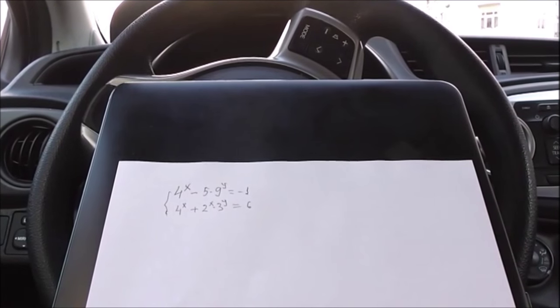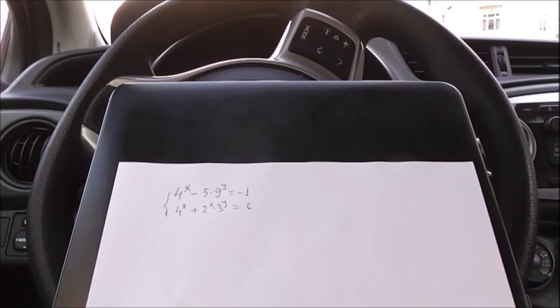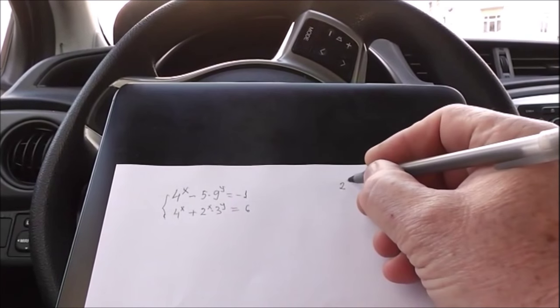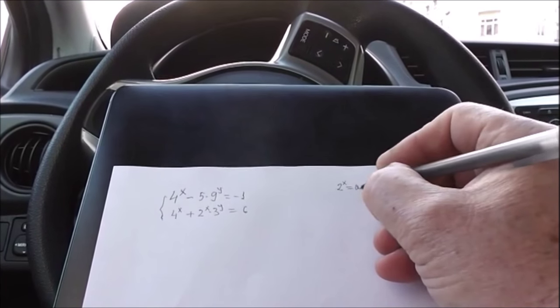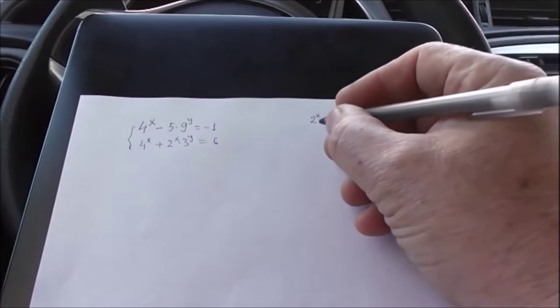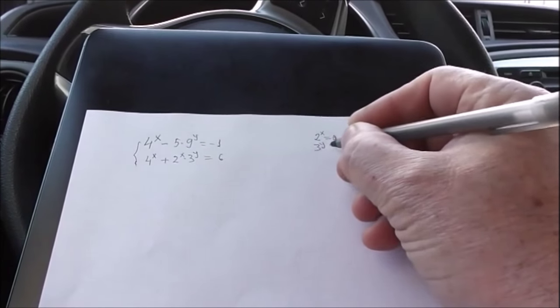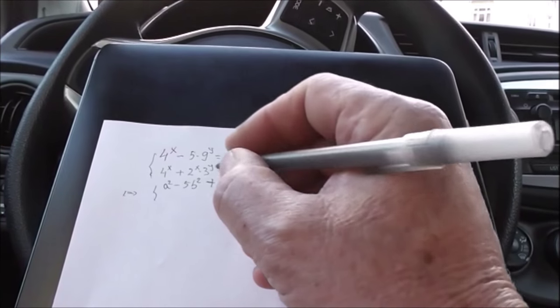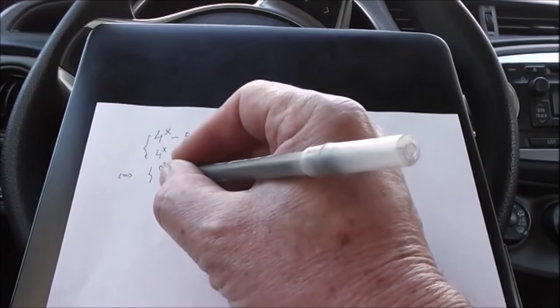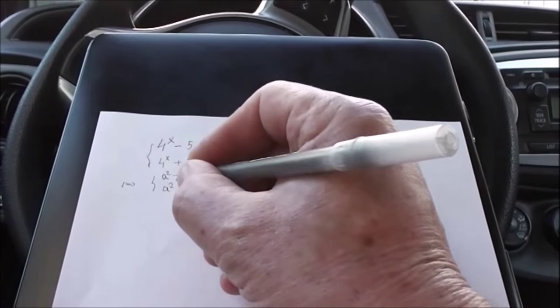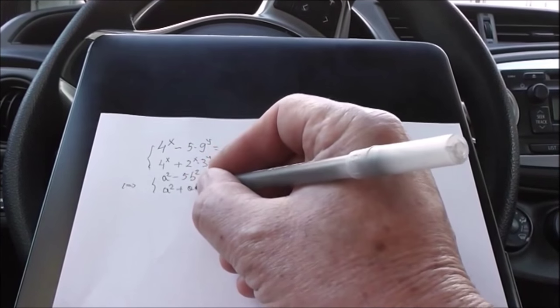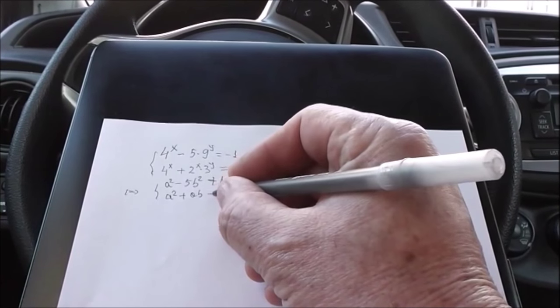I thought to note with a and b. What do you note with a and b? 2^x equals a, 3^y equals b. Then we have a² minus 5b² plus 1 equals 0 and a² plus ab minus 6 equals 0.